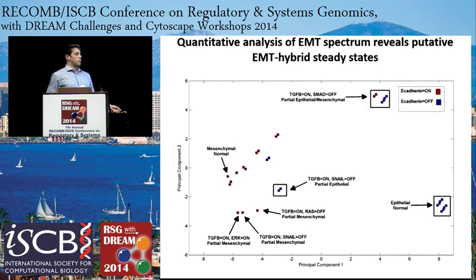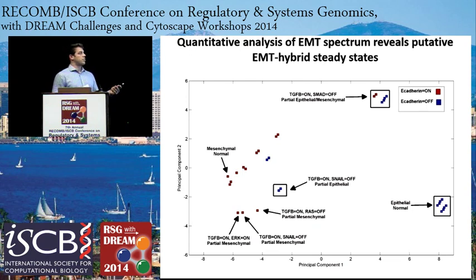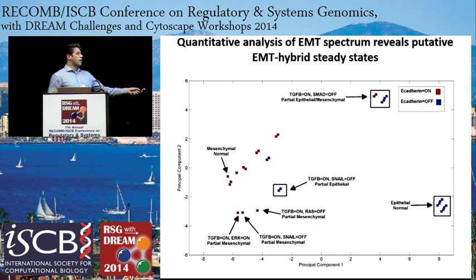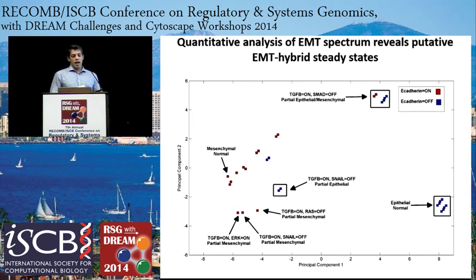We also did a principal components analysis, collecting all steady states from our unperturbed networks and a handful of perturbed models and clustering them by PCA. The possible epithelial steady states from our unperturbed network cluster on one side, the mesenchymal normal steady state on the other, and many of the perturbed steady states are intermediate by PCA—another representation of potential hybrid EMT states.